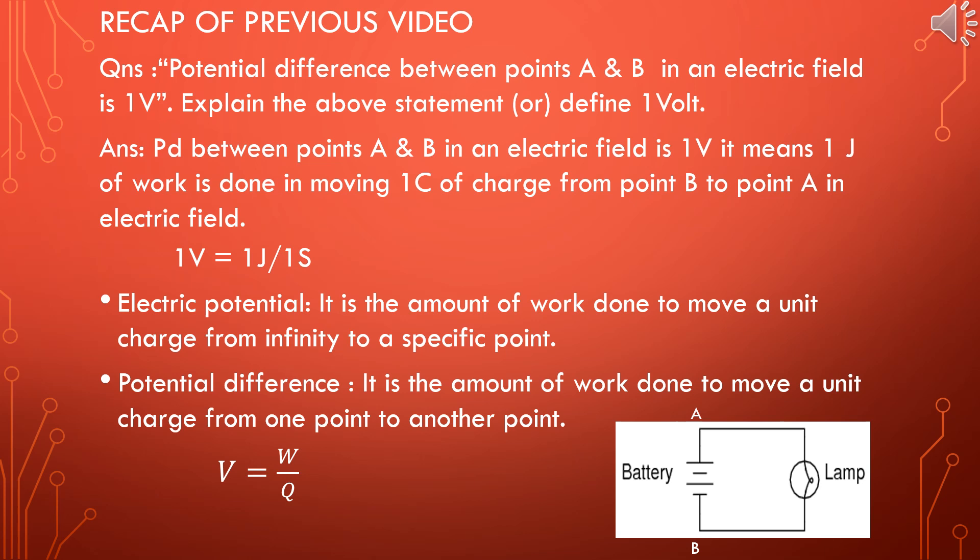In the previous class, I explained about electric potential and potential difference. Electric potential is the amount of work done to move a unit charge from infinity to a specific point. This means a battery with some stored energy — it can be 12 volts, 6 volts, 18 volts, whatever it can be. If you connect that battery in a circuit, you are going to create an electric pressure difference, which is called potential difference.